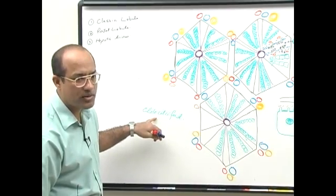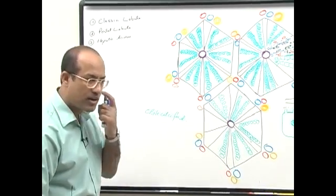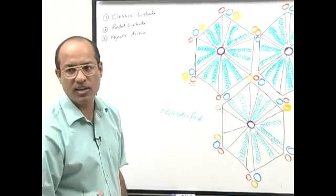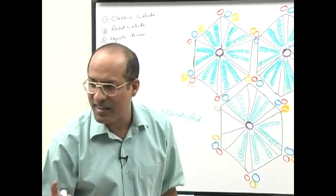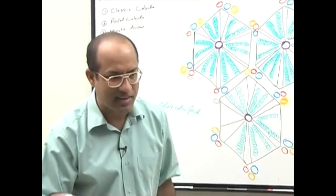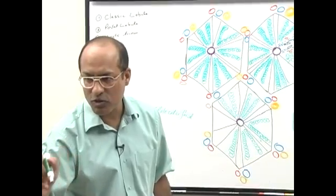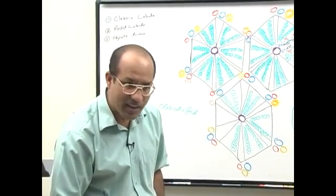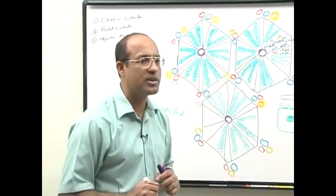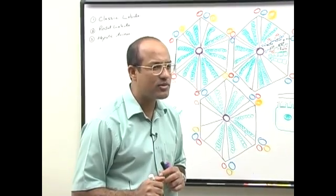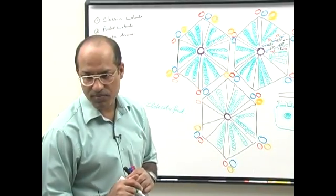After hydroxylation by 25-hydroxylase, cholecalciferol becomes 25-hydroxycholecalciferol. This then goes to the kidney, where one more hydroxylation occurs at carbon number one, converting it into 1,25-dihydroxycholecalciferol. When vitamin D is double-hydroxylated it becomes fully active to regulate calcium and phosphate. This is relevant because in liver and kidney diseases, vitamin D metabolism may be disturbed.